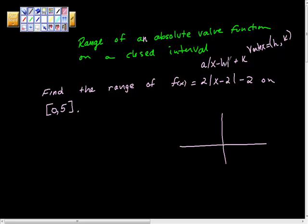When we're looking for that h value, we're saying what number makes this piece in here equal 0. So what makes this equal 0 is 2. So we have the point 2, and this is f of 2. So 2 minus 2 is 0, absolute value of 0 is 0, 2 times 0 is 0, minus 2 is negative 2. So we get the point 2, negative 2.